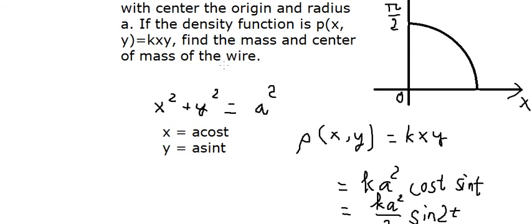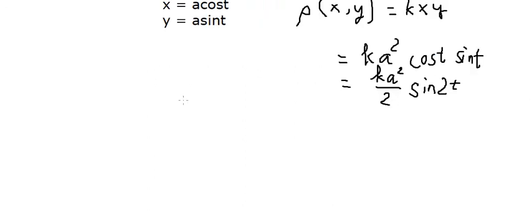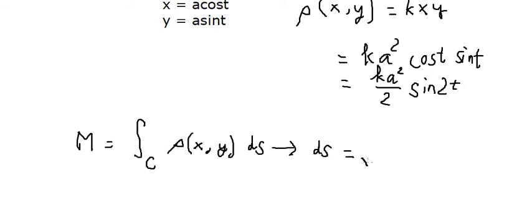Next we need to use the formula to find the mass and the center of the mass. We use the line integral and we put rho(x,y) ds. ds should be the square root of first derivative of x to the power of 2 and first derivative of y to the power of 2, dt.